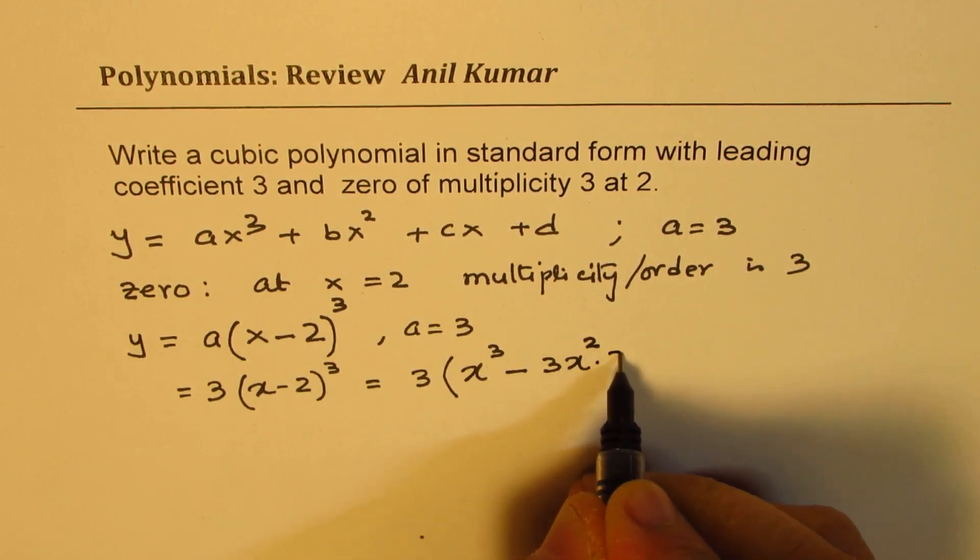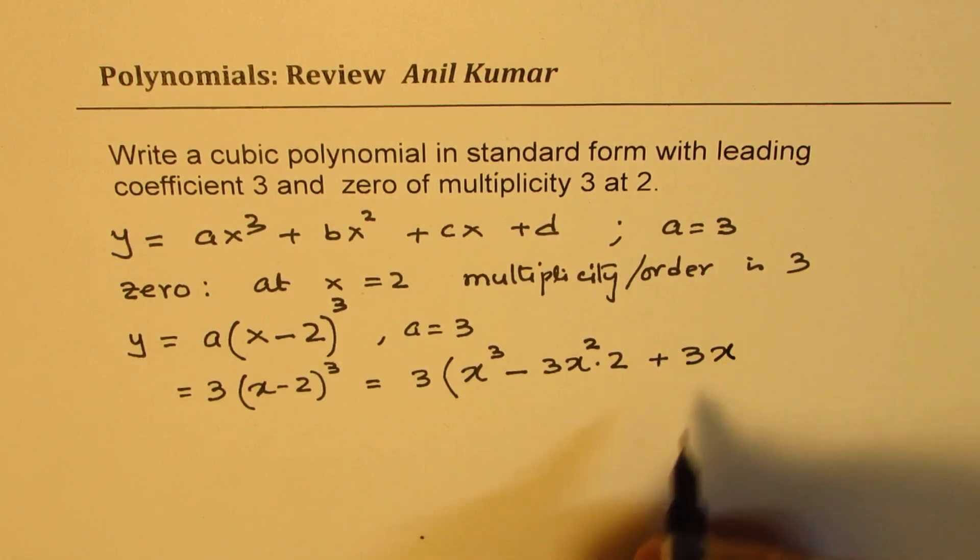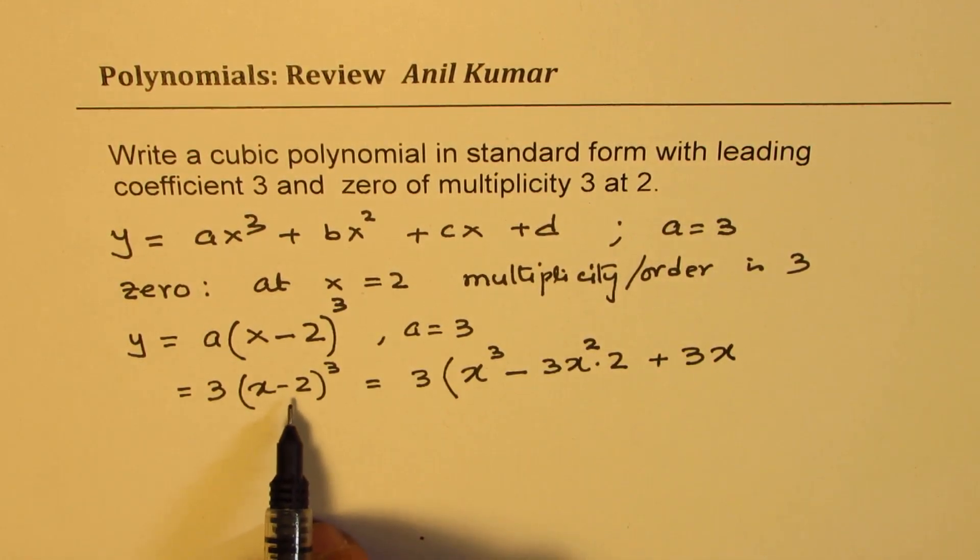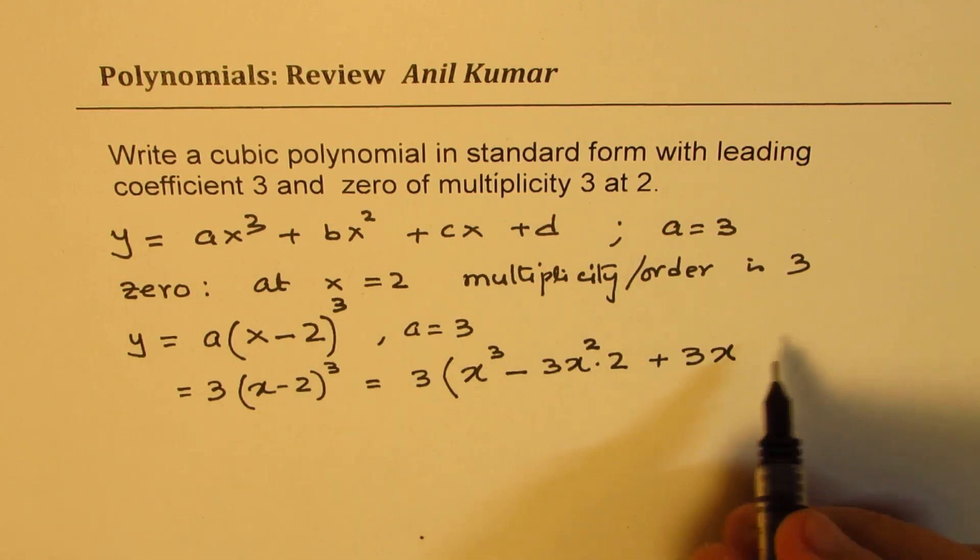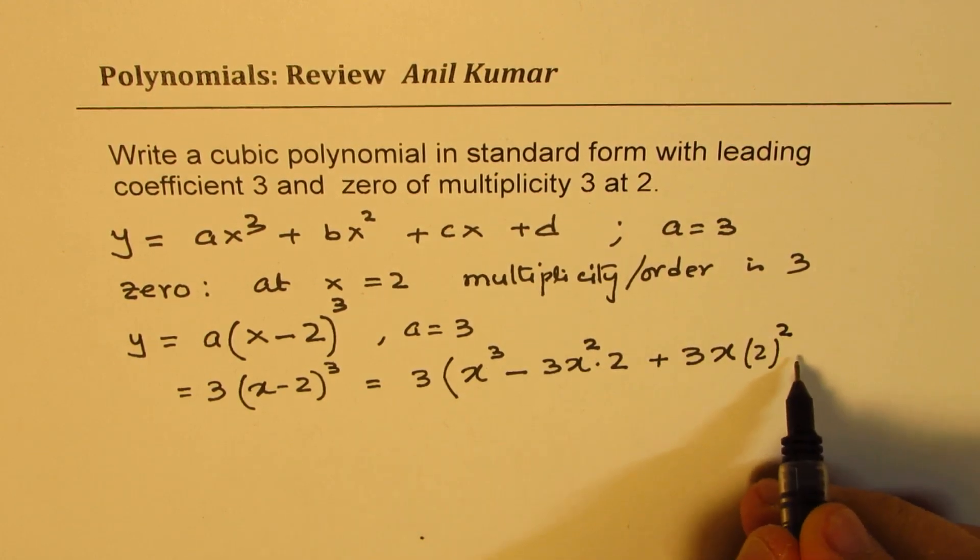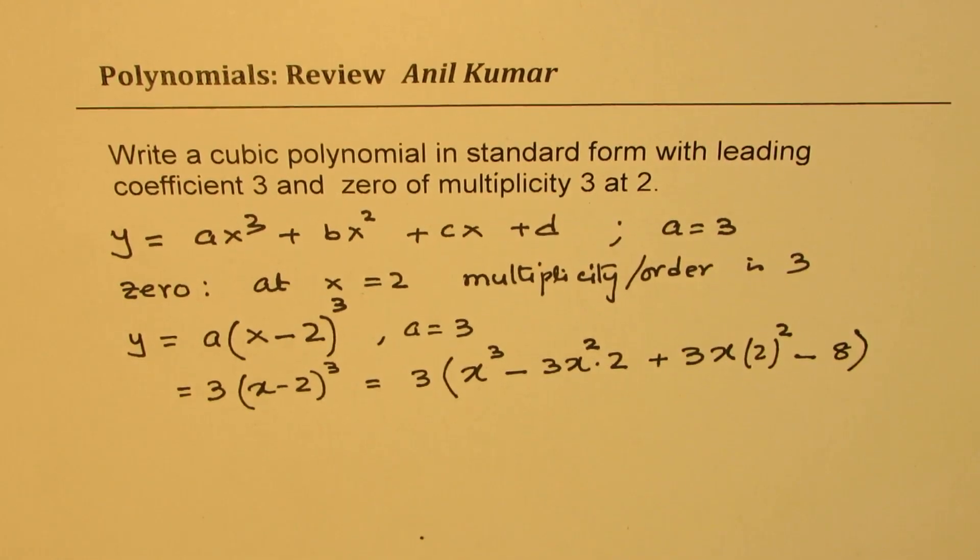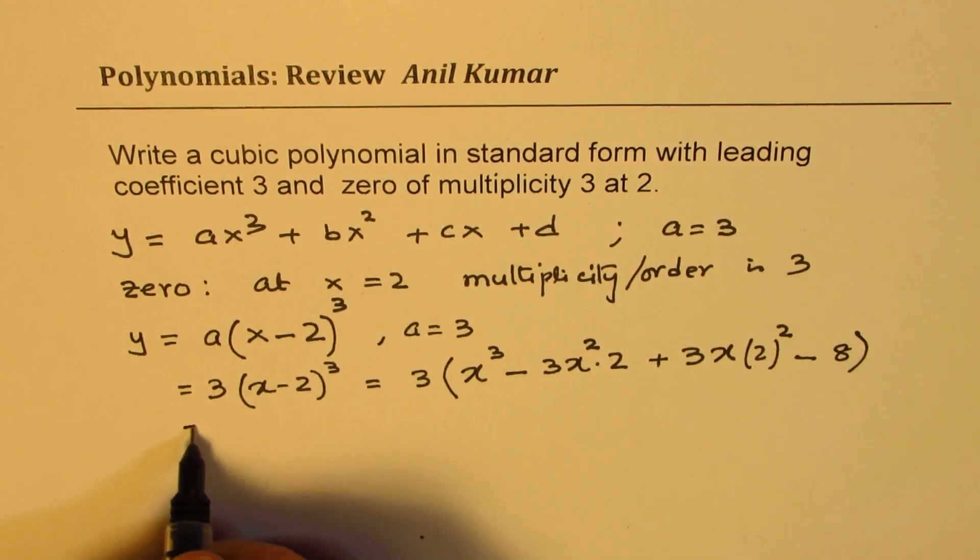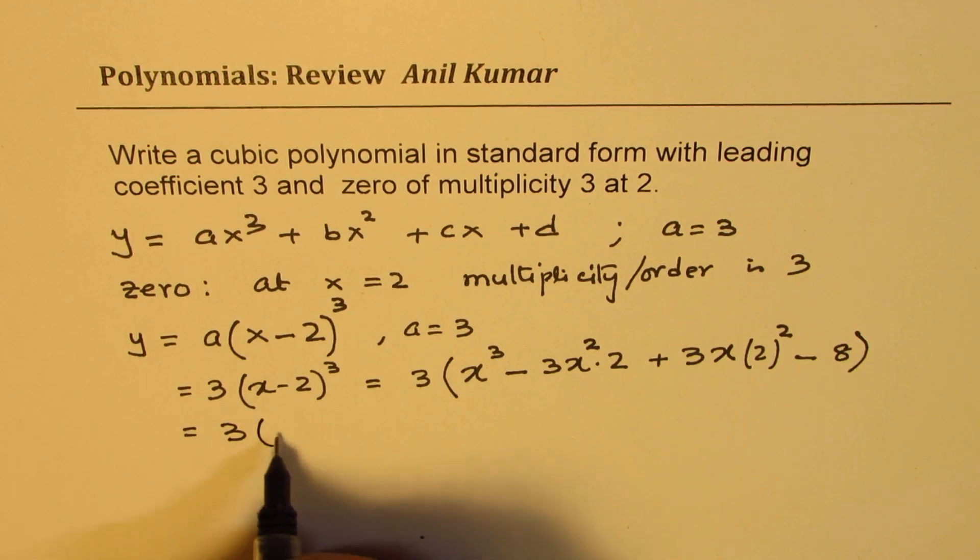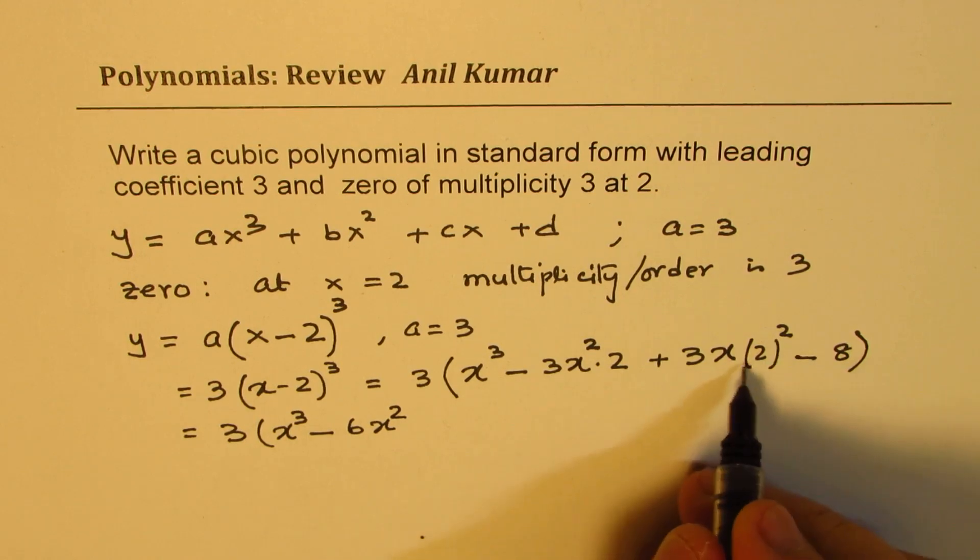We get x³ - 3(x²)(2) + 3x(2²) - 2³, which is x³ - 6x² + 12x - 8. So we get 3 times (x³ - 6x² + 12x - 8).